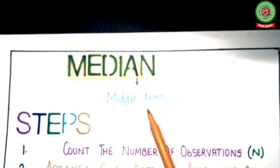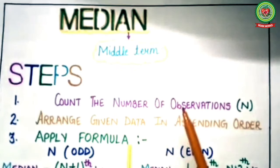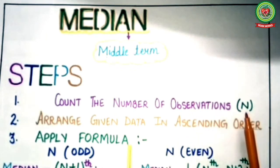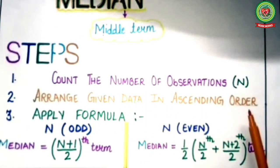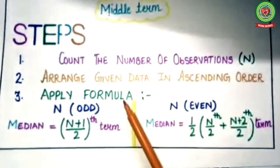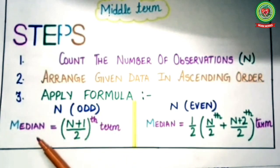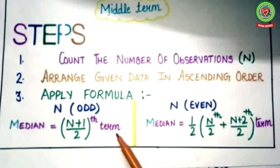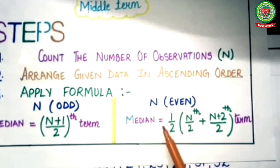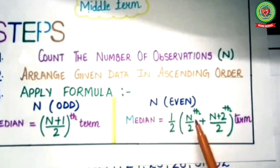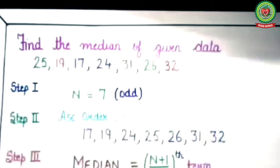This middle term is known as the median. Median means the middle term. The steps to follow: count the number of observations and denote it as N; arrange the given data in ascending order; then apply the formula. If N is odd, median = ((N+1)/2)th term. If N is even, median = (1/2) × [( N/2)th term + ((N+2)/2)th term].